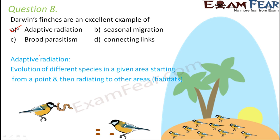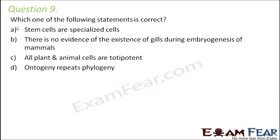So option A is the right one. Question number 9: Which one of the following statements is correct? First option: stem cells are specialized cells. Stem cells are not specialized cells. Stem cells are the undifferentiated cells of multicellular organisms which are capable of giving rise to infinitely more cells of the same type. These stem cells differentiate to form specialized cells — those cells which have a specific function to perform. Stem cells do not perform a specific function; they continue to divide to form more cells, which then act as specialized cells. So the first option is not correct.